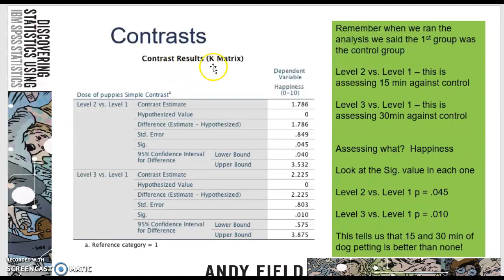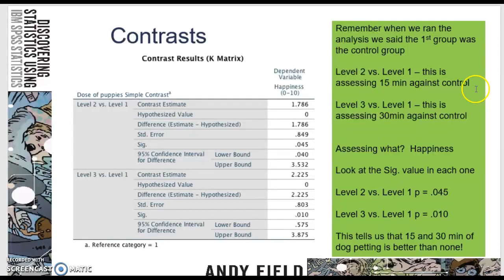So this contrast matrix that is going to be generated is going to compare our groups against the control group. So level 2 versus level 1 — level 2 is going to be our 15 minutes against our control group. Level 3 versus level 1 is going to be our 30 minutes relative to our control group. The importance of this is knowing which group is your control group, so that you can tell SPSS that the control group is either the first or the last group, so that when it does these contrasts, it's comparing the control group against the other groups.